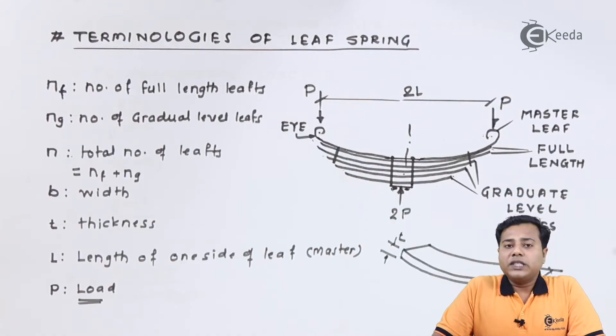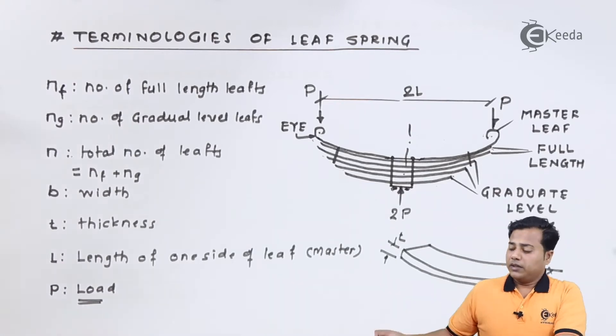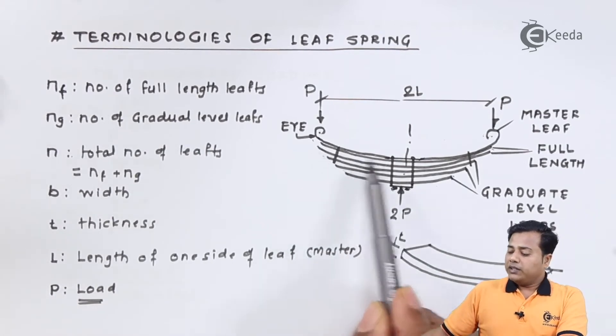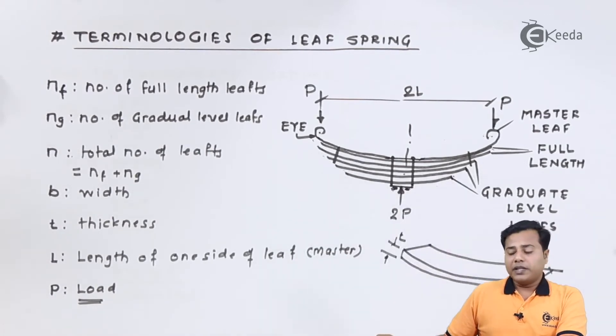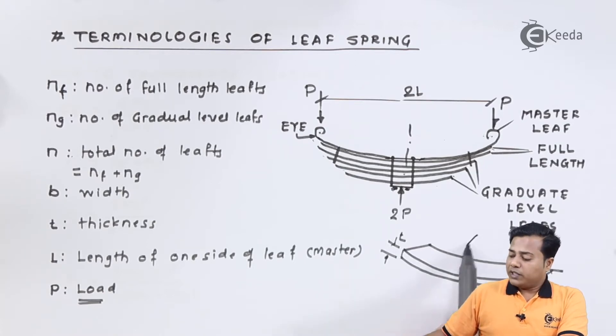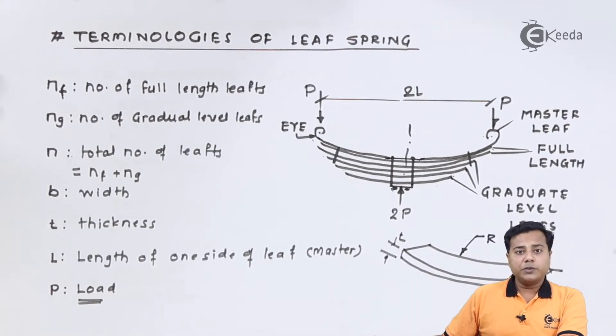Students, you can see on the screen different terminologies and the schematic associated with this leaf spring. If you see this properly, this is how the structure of leaf spring is explained, where different plates of this particular schematic are used. This particular dimension is called width of the leaf spring, this is the thickness, and of course these are the different lengths. If you see there is a curvature, so there is always some radius associated with the leaf spring.